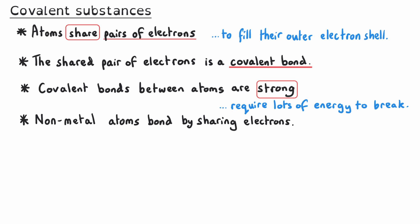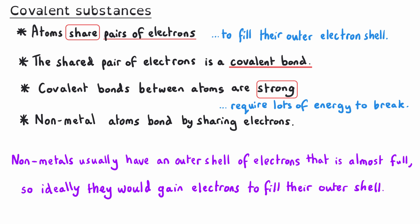The type of atoms that form covalent bonds are non-metals. They bond together by sharing electrons. This makes sense if you consider that generally non-metals need to gain electrons to fill their outer shell, which is usually almost full. And so if two atoms both need to gain electrons, the only way they could do that is by sharing electrons, because they couldn't transfer electrons between one and the other and then both have a full outer shell.